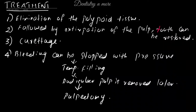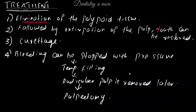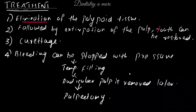Regarding treatment, the first step is elimination of the polypoid tissue, followed by extirpation of the pulp — provided the tooth can be restored. The polypoid tissue is removed using a periodontal curette or spoon excavator. Some bleeding may occur but can be controlled by pressure. The pulp tissue of the chamber is then completely removed and a temporary dressing is sealed in contact with the remaining radicular pulp tissues.